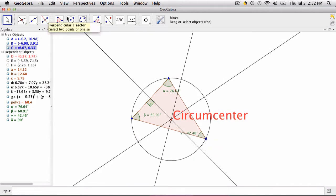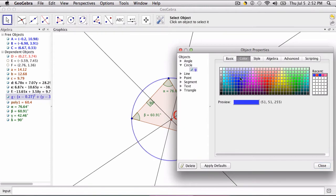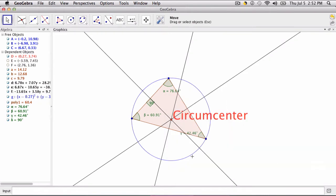And you might even color-code this. Select the circle, object properties, and maybe change the color to highlight that circle.